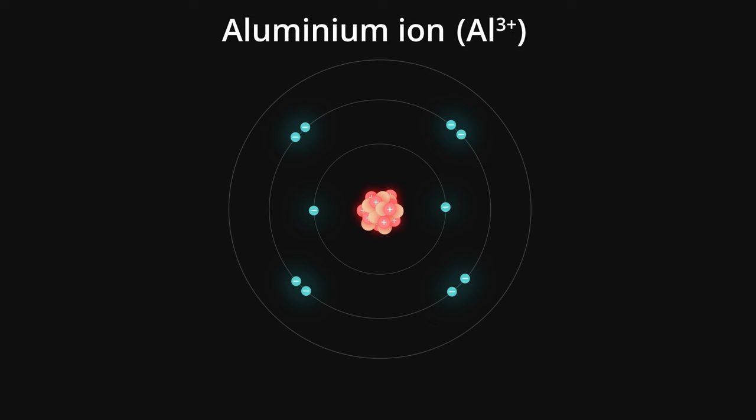When an atom loses electrons, as metal atoms do, it becomes a positively charged ion. The aluminium atom loses three electrons, so its charge becomes plus three. We write it like this: Al three plus. Atoms that form positive ions don't change their names, so this is simply called an aluminium ion.